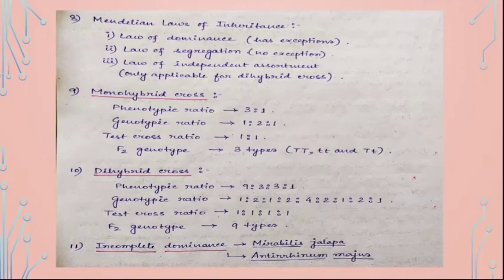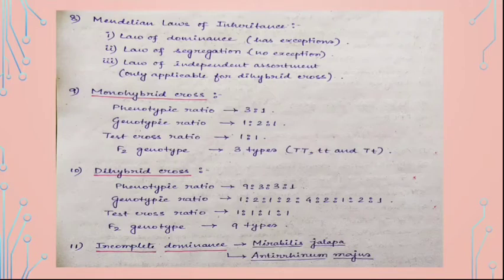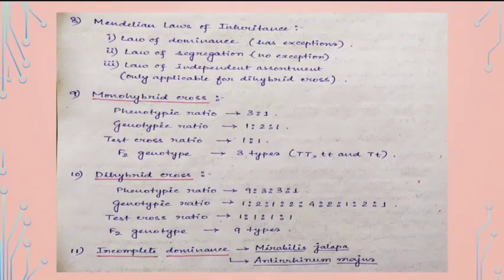Mendel's two main laws are the Law of Dominance, which has exceptions, and the Law of Segregation, which has no exceptions at all. There is also a third law — the Law of Independent Assortment — applicable only for dihybrid crosses, while the first two laws apply to monohybrid crosses as well. The exceptions to the Law of Dominance are incomplete dominance and codominance.